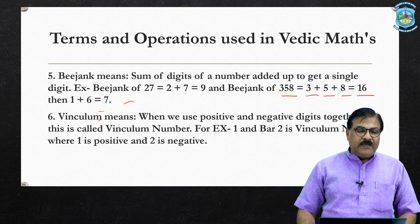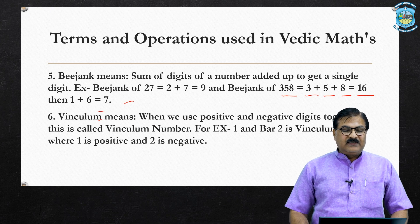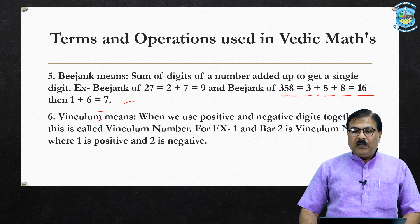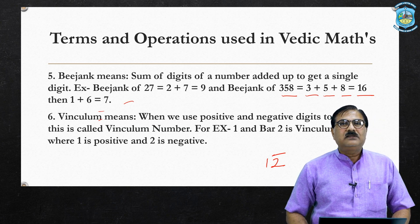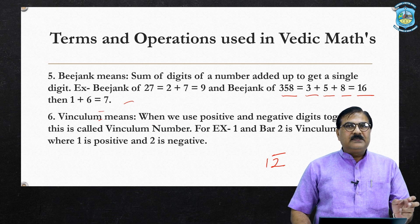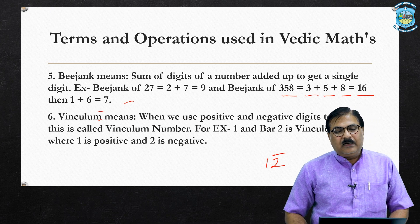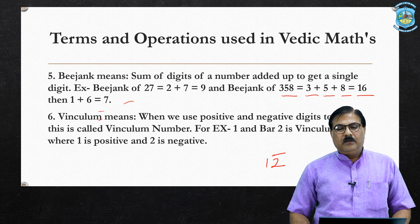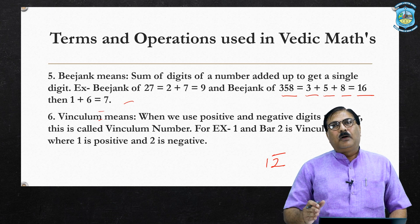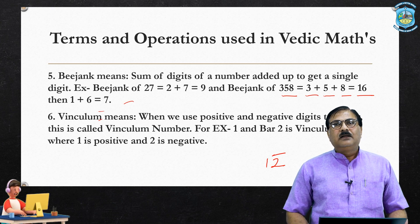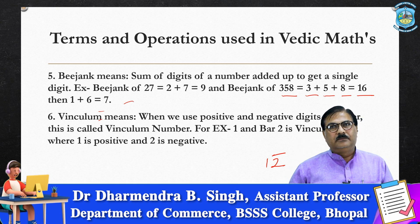The next term is vinculum number — when we use positive and negative digits together, this is called a vinculum number. For example, writing one-two with a bar on top of the two is a vinculum number because a positive digit and a negative digit are written together. These are the few terms and operations often used in Vedic mathematics. Thank you viewers — I will be back with some numerical problems based on Vedic mathematics like addition, subtraction, division, multiplication, square and square root. Thank you, Jai Hind.